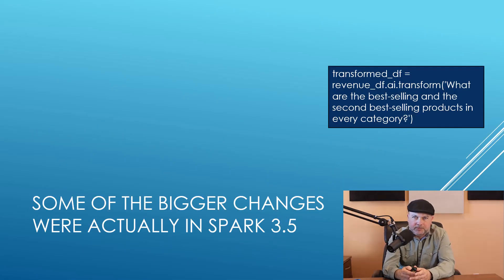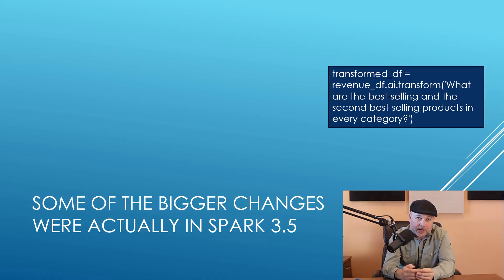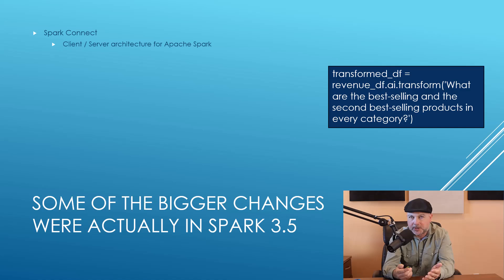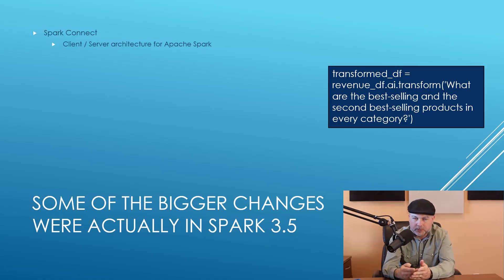Some of the bigger changes attributed to Spark 4 actually came out in Spark 3.5, which is probably going to be the last version of Spark 3 before we switch to Spark 4. One of those is Spark Connect — a big change where Spark is now available in a client-server architecture. Previously, you would run your Spark driver scripts on a computer in your cloud, and that computer would talk to other computers in the cloud in a self-contained cluster.